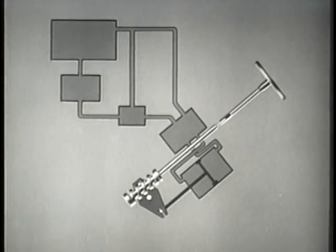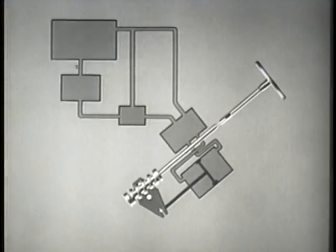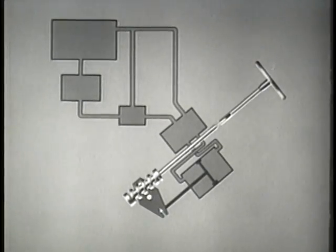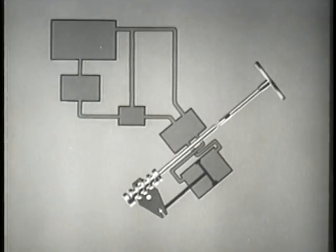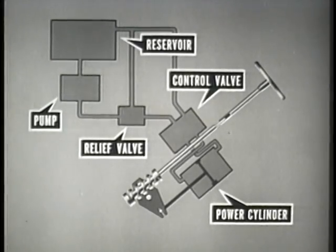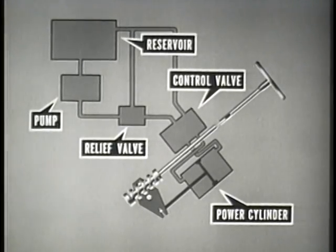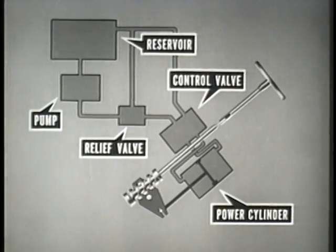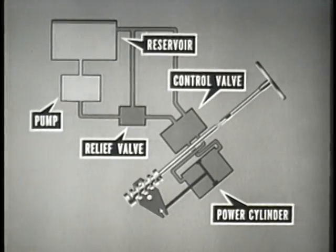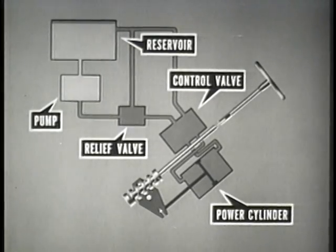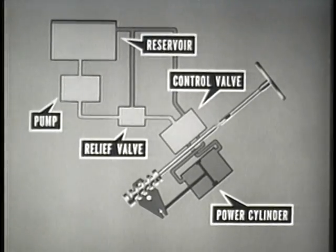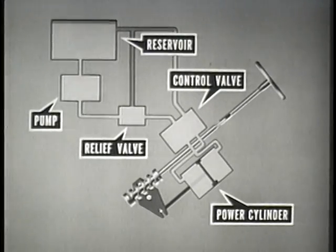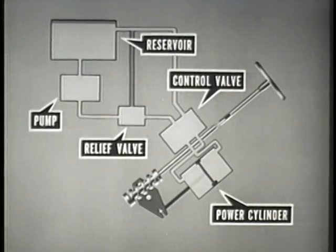To aid in illustrating the internal function of the hydraulic system, a schematic diagram will be used. The steering linkage from the pitman arm lever to the front wheels will not be shown. The reservoir supplies fluid. The pump driven by the engine delivers fluid under pressure to the relief valve and control valve. The control valve, actuated by the steering shaft, directs the fluid to the power cylinder. The power cylinder converts hydraulic pressure into mechanical force by means of a piston.